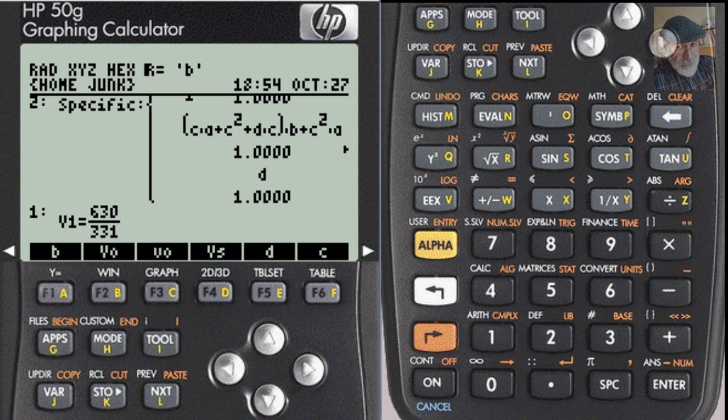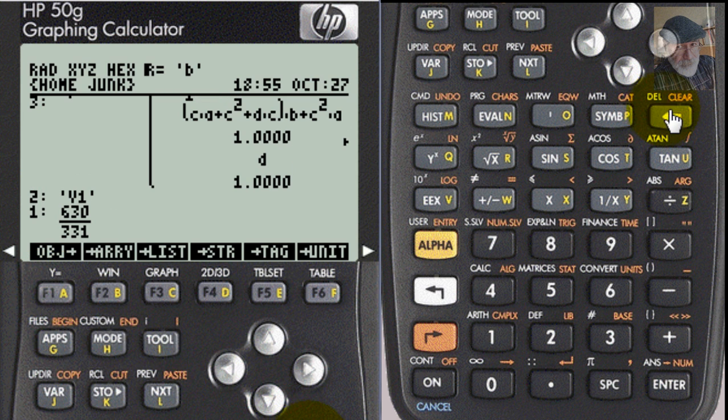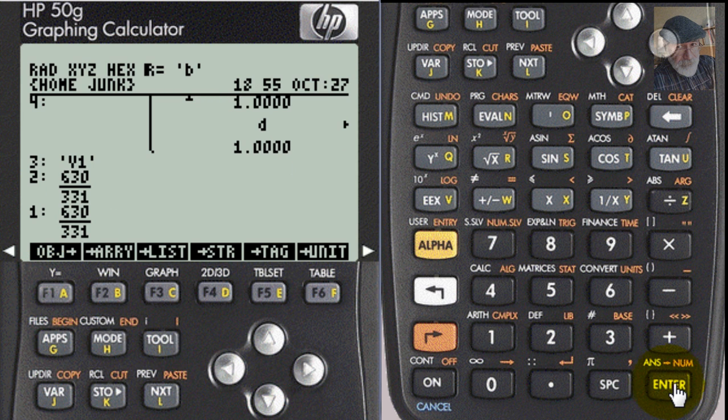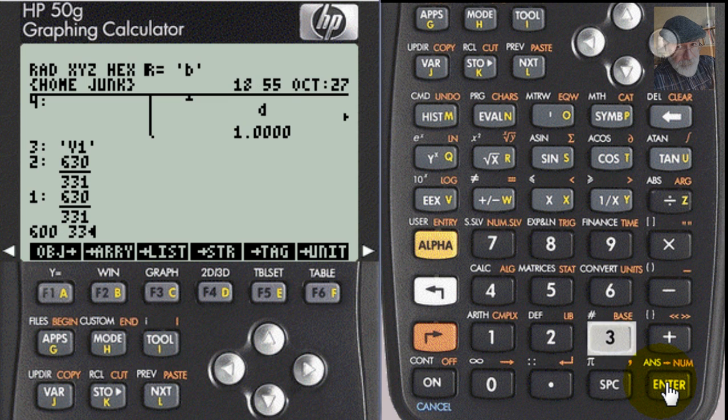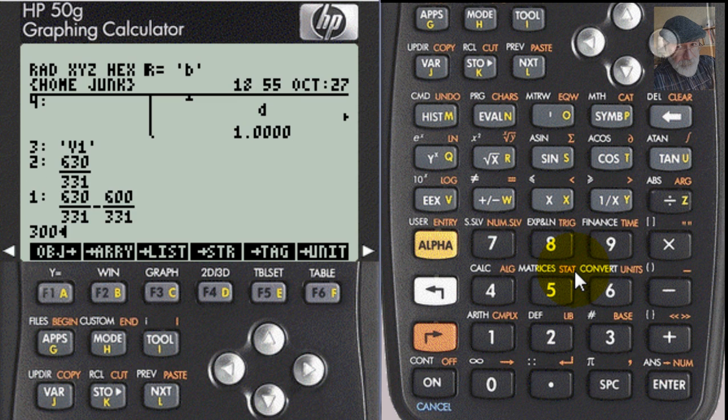Now we are ready. We know v0, we know v1, and we know B, which is 300 ohms. Now we can compute the value of the current Ib. Break the object into pieces. That is v1. v1 minus 600 divided by 331, which is v0, divided by 300, which is B. That is the value of the current Ib.